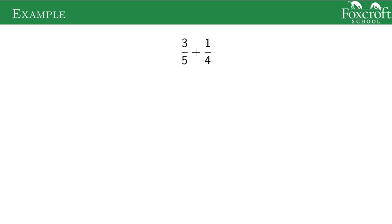We're going to slowly build up the examples, starting with numbers and then adding in x's and more rational expressions. A reminder of how we find a common denominator: we don't have an equal sign, so the only thing we can do is manipulate the expression in a way that keeps it the same. The way we do that with fractions is we multiply the top and bottom of the fraction by the same number. That fraction equals 1, and multiplying anything by 1 doesn't change its value.